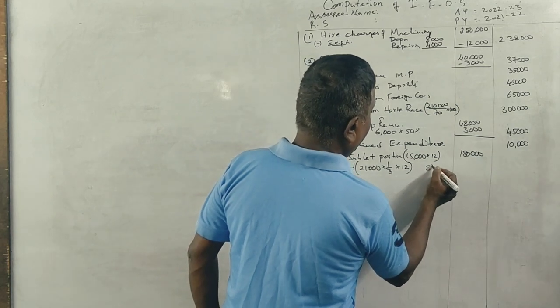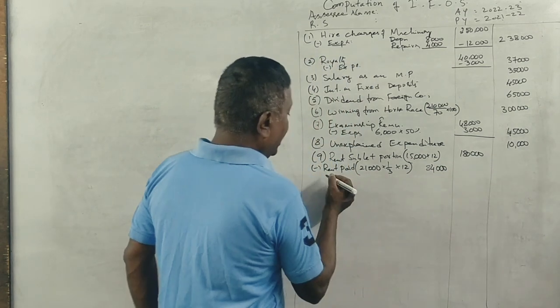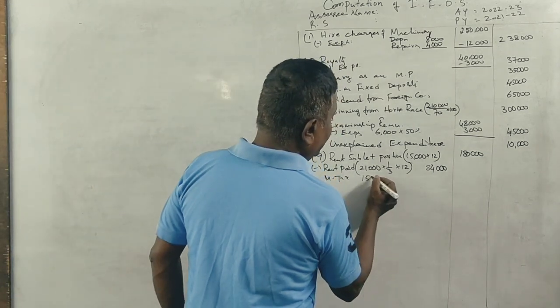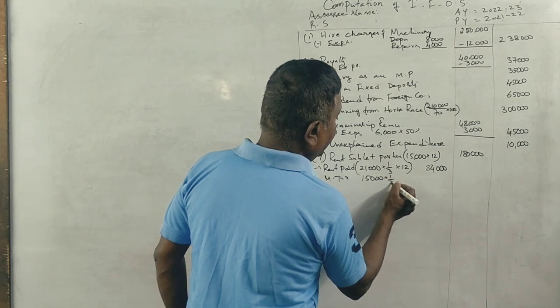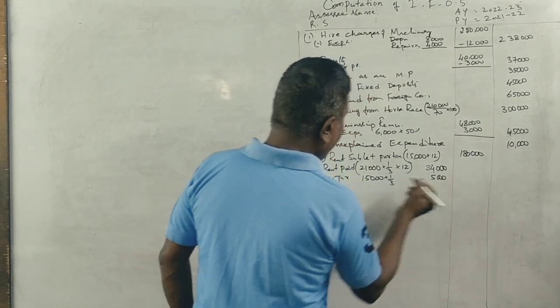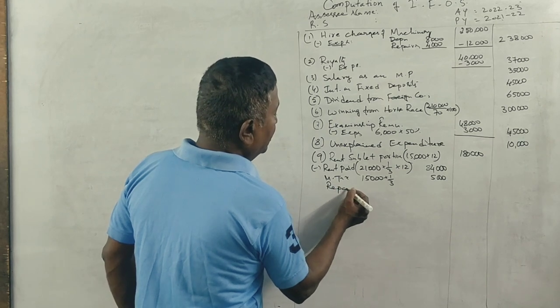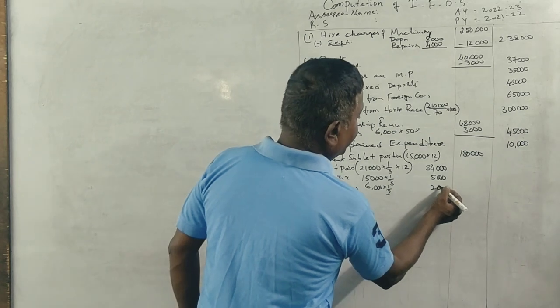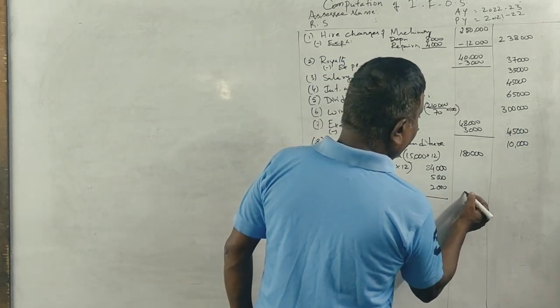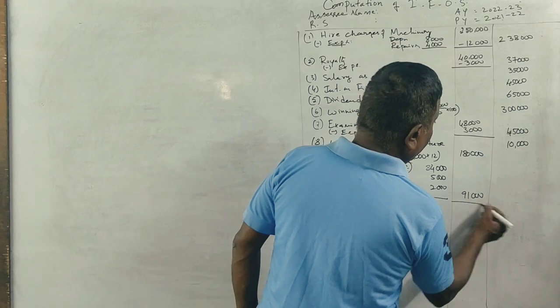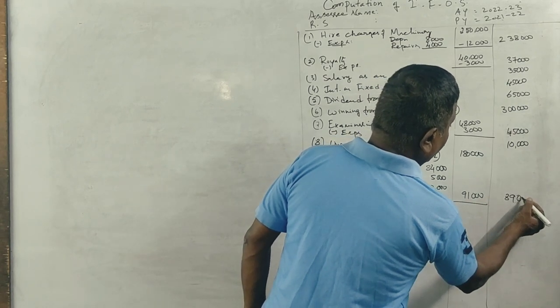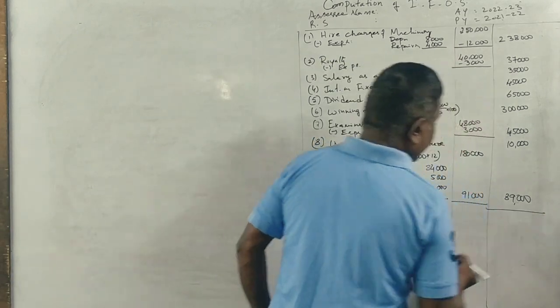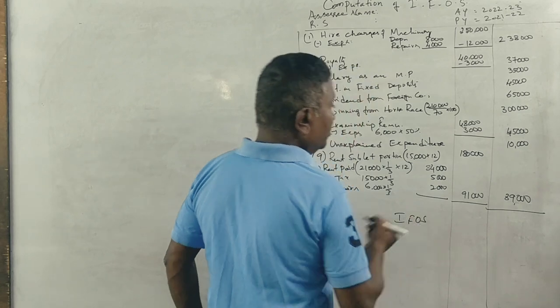Municipal taxes for whole house: Rs. 15,000. One-third portion: Rs. 5,000. Repairs paid: Rs. 6,000. One-third portion: Rs. 2,000. Total: Rs. 91,000. Rs. 1,80,000 minus Rs. 91,000 equals Rs. 89,000.